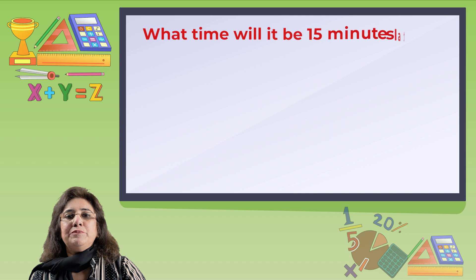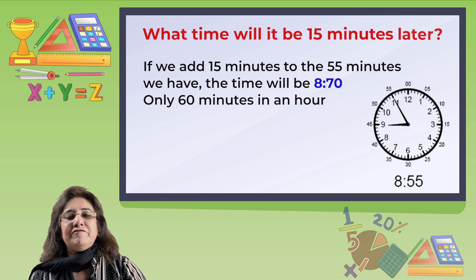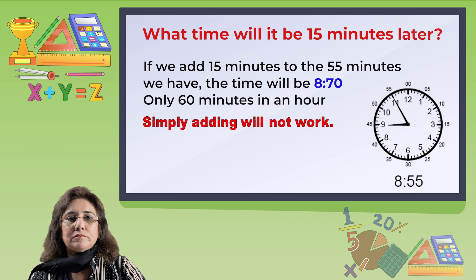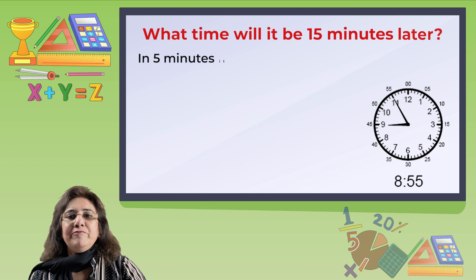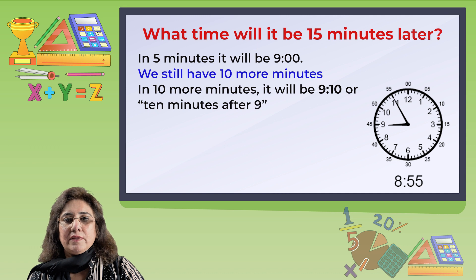What time will it be 15 minutes later than 8:55 p.m.? If we simply add 15 minutes to the 55 minutes we have, the time would be 8:70 p.m. — but there are only 60 minutes in an hour, so simply adding will not work. In 5 minutes it will be 9:00. We still have 10 more minutes, so in 10 more minutes it will be 9:10.